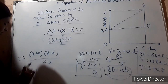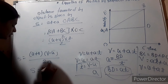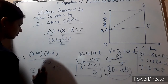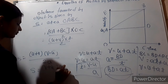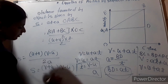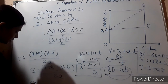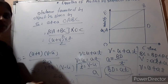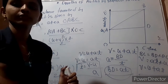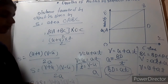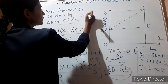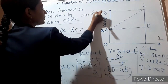By replacing the value of t, s is equal to u plus v, multiplied by v minus u upon 2a. We can write this as v plus u times v minus u upon 2a. So 2as is equal to v plus u times v minus u.